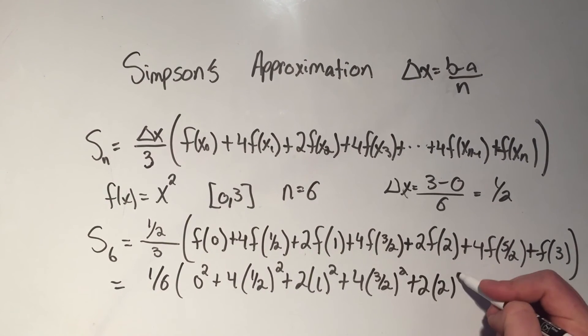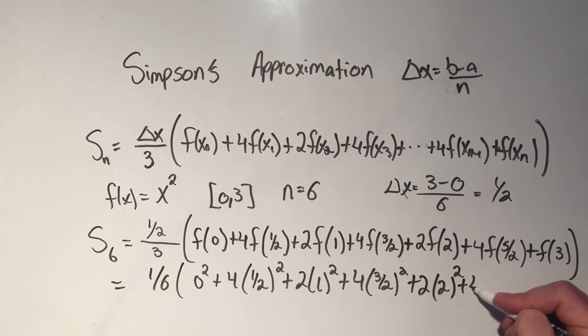plus 2, plug in 2 squared, plus 4, plug in 5 halves, and then plus 1 times, plug in 3, that's 3 squared.